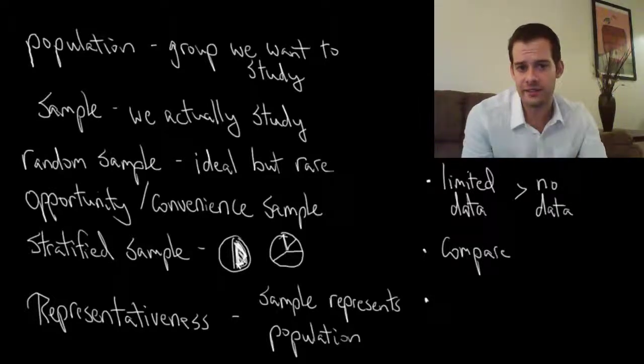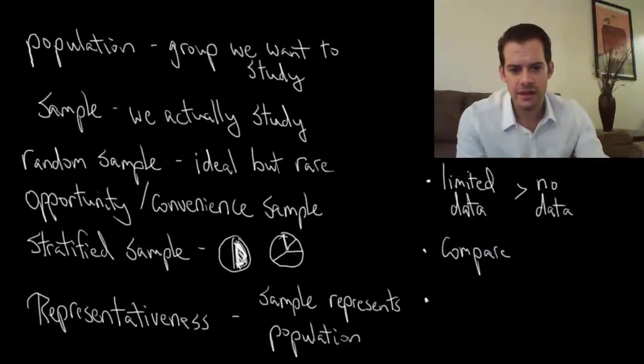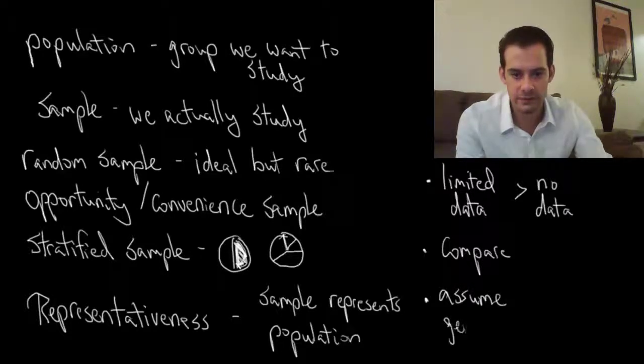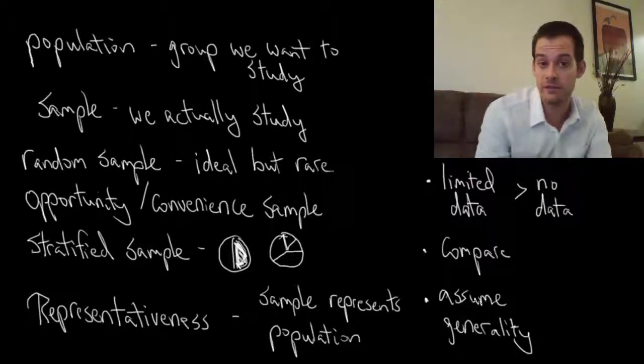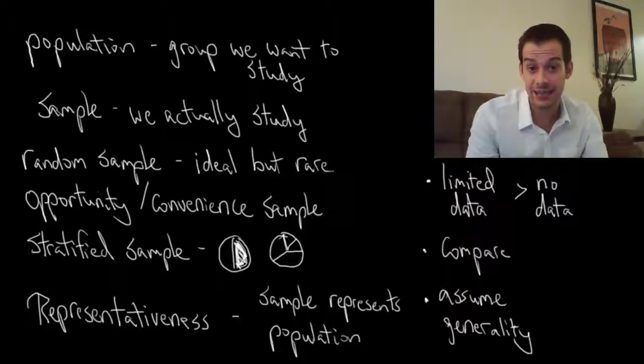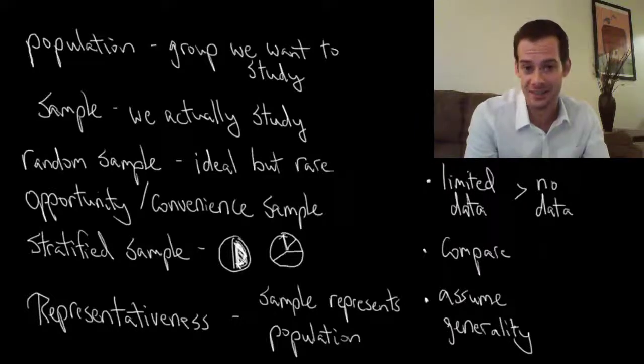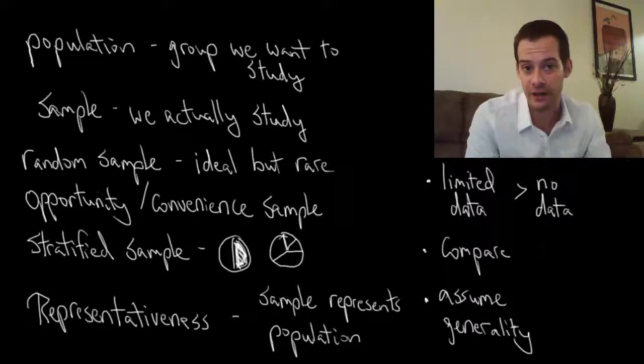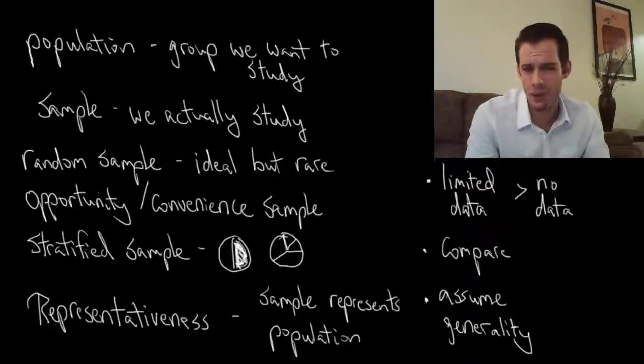And the third reason why non-representativeness is not the end of the world is that sometimes we assume generality. Sometimes we look at the results from a non-representative sample and we simply assume that they apply to everyone else. Now, you might say, Mike, that sounds like terrible science, that you're not supposed to do that. You shouldn't be looking at a non-representative sample and drawing large conclusions. And that's true, but sometimes it's okay. So when is it okay?